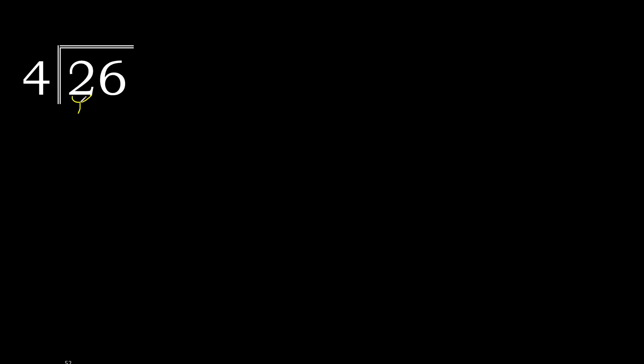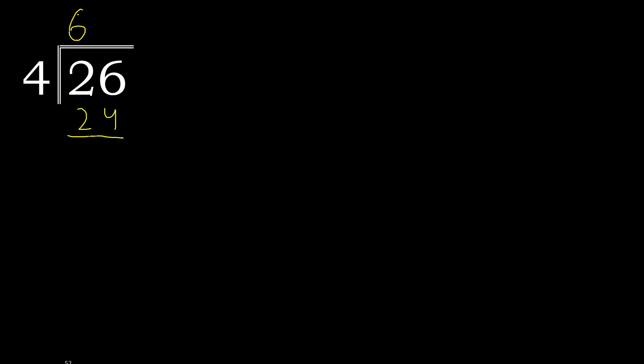26 divided by 4. 2 is less, therefore with the next 26. 26 is not less, therefore with 26: 4 multiplied by which number is nearest to 26 but not greater? 4 multiplied by 7 is 28 — 28 is greater. 4 multiplied by 6 is 24 — 24 is not greater. So 26 minus 24 is 2.